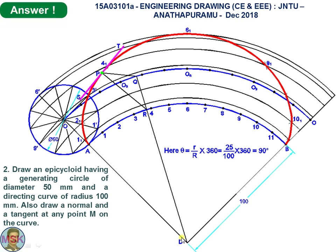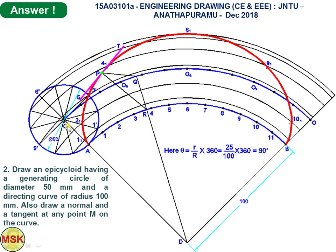With D as center, draw arcs through points 1', 2', 3', 4', 5', and 6' on the rolling circle. Similarly draw another arc with D as center through the center of the circle. The center of the circle will always slide on this arc only.